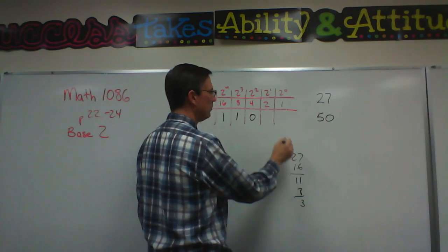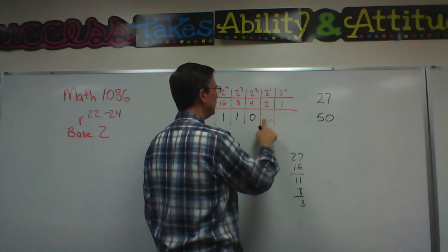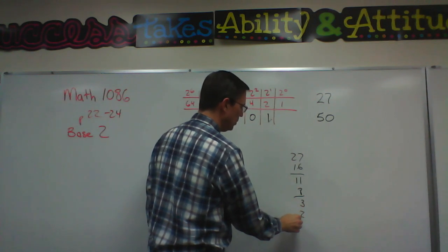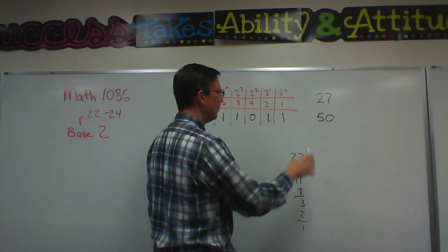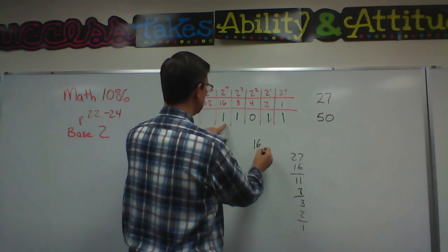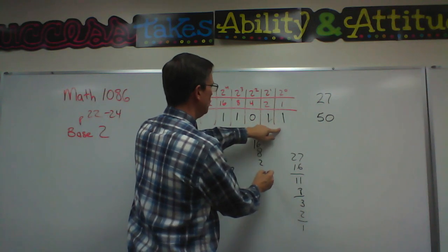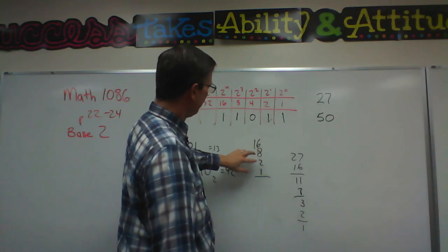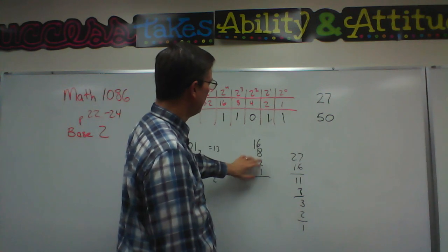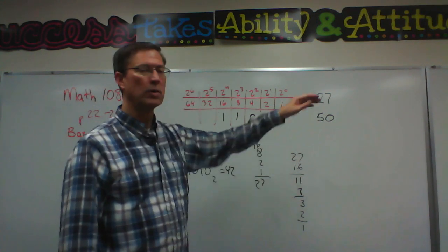So I can subtract 8 and I'm left with 3. So do I have a digit here? No. But 3, I can put a 1 there and that represents a 2. Subtract and I do have a 1 left. Let's go back and add it up. This says I have a 16 plus an 8 plus a 2 plus a 1. 8 plus 2 is 10, 6 plus 1 is 7, so that's 17. Carry the 1, 27. We got it.